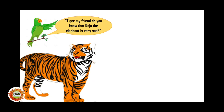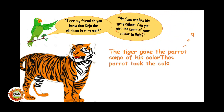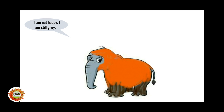The parrot flew to the tiger and asked, tiger my friend, do you know that Raja the elephant is very sad? He does not like his grey color. Can you give me some of your color for Raja? The tiger gave the parrot some of his color. The parrot took the color and flew back to Raja. Raja put on the orange color on his body. But he said, I am not happy — I am still grey.